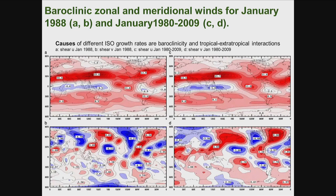The baroclinic zonal wind and meridional wind for January 1988 compared with the 1998–2009 average show some small differences, but mostly they are very similar — by eye there is not much difference.